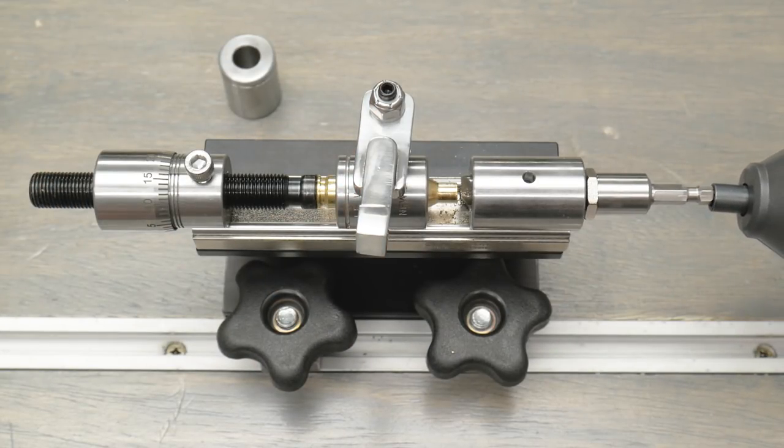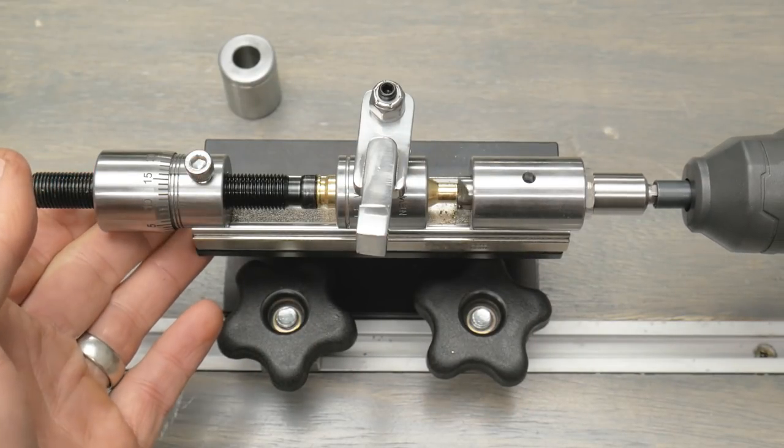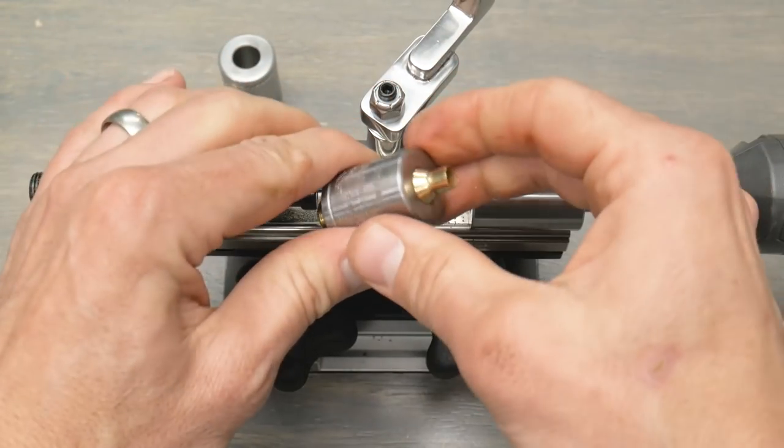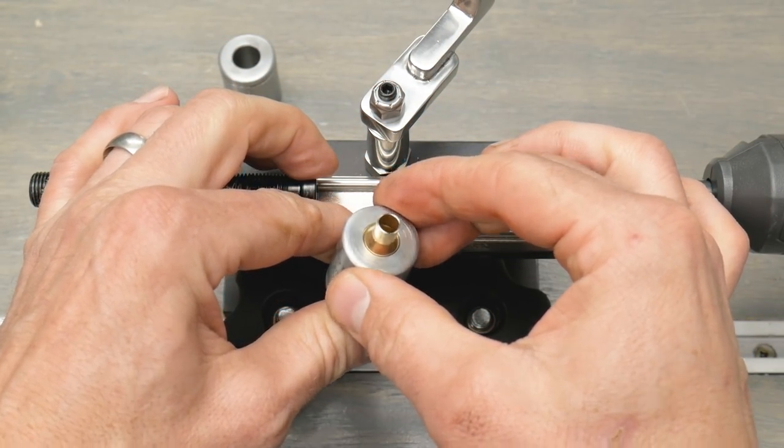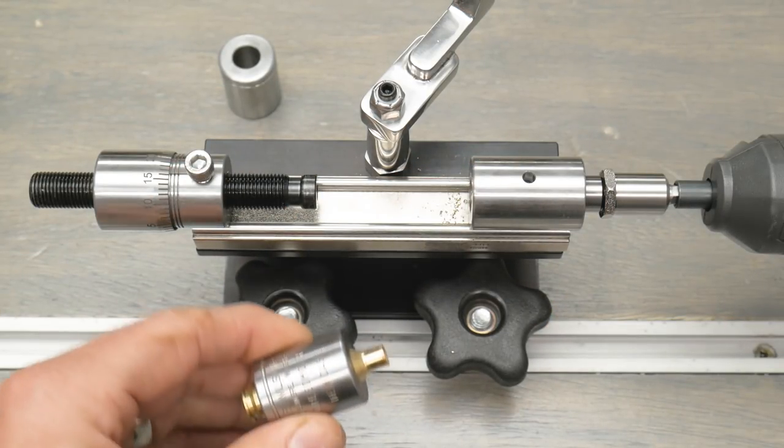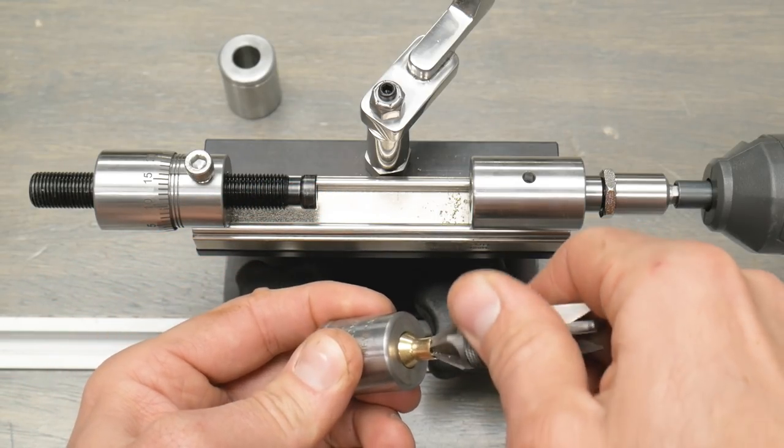Use our power here to trim the case and let's see what that looks like. Looks like we got a good clean trim. Here's another little tip: I actually like to take the chamfer tool while I've got the case in the case holder and give it a quick turn.